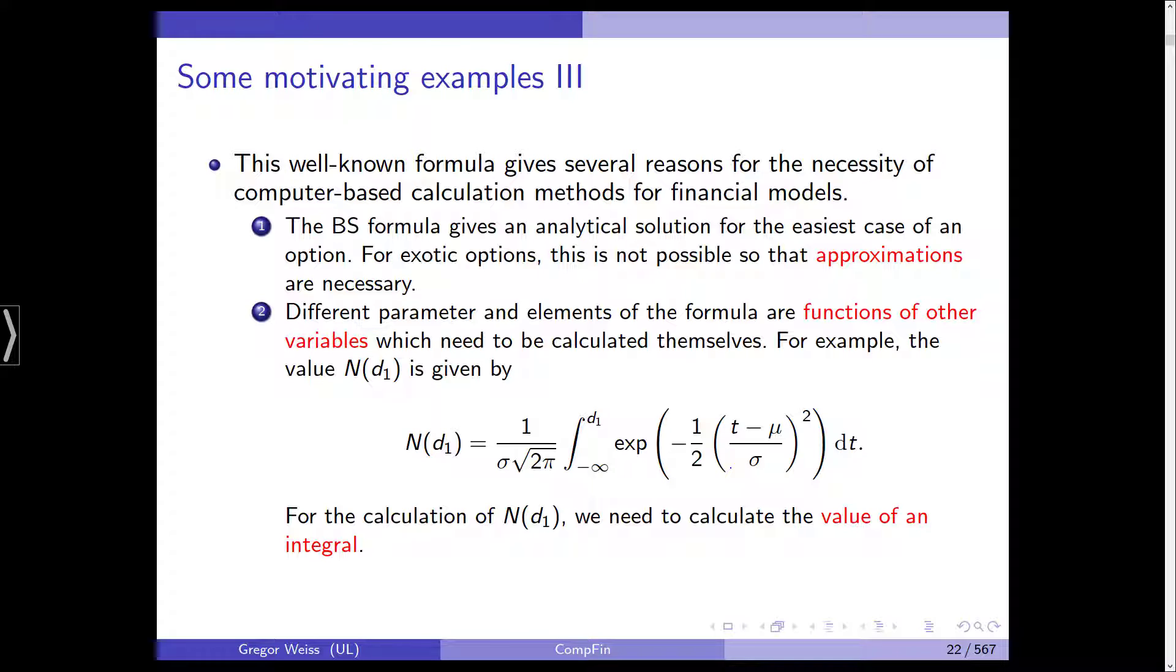Like, for example, an average call, where we are not paid out the current price, but we actually paid the average over the last, let's say, the last month. As soon as we have such an exotic option, we don't have an analytical solution anymore. So, the Black-Scholes formula cannot be used, and we need to find an approximation.